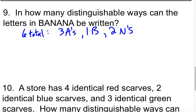So the number of distinguishable ways to write them is going to be our total, six factorial over three factorial, that's the A's. One factorial, that's the B's. And two factorial, that's the N's.